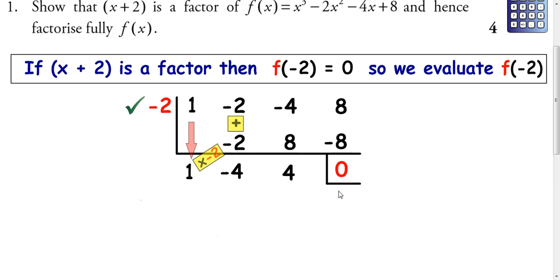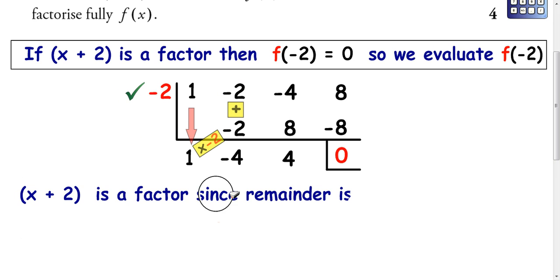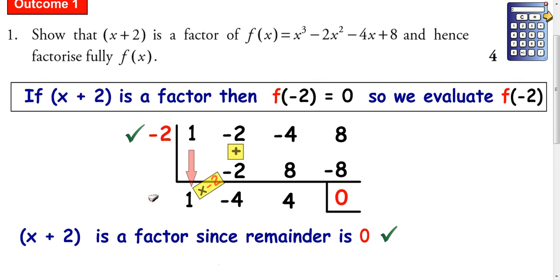This 0 is what we're looking for. And because the remainder is equal to 0, we can say x plus 2 is a factor. That gets you a mark for it. You have to write this statement.